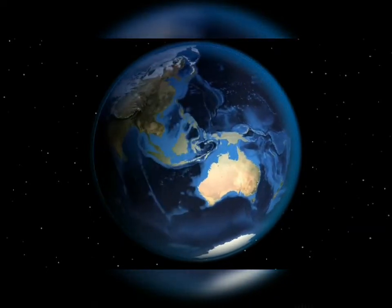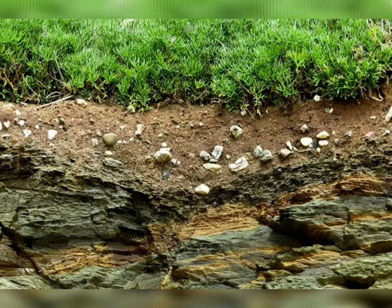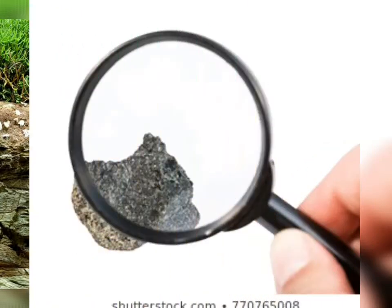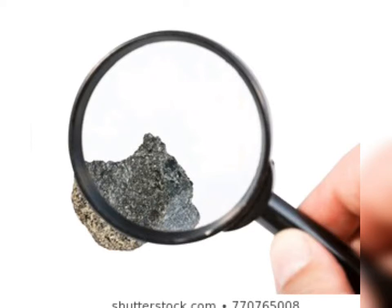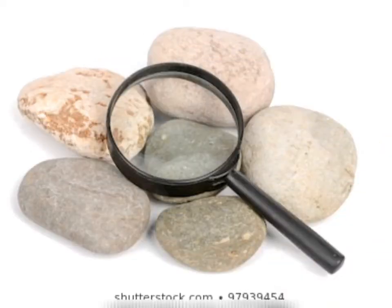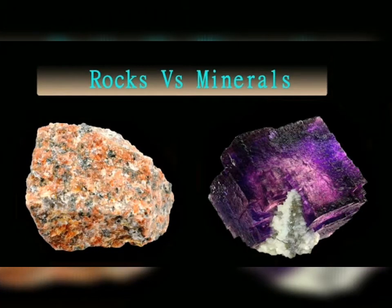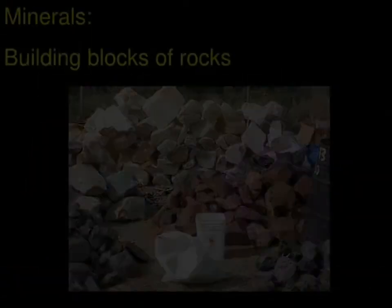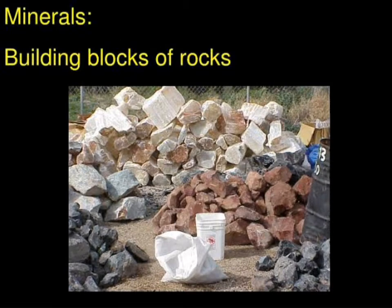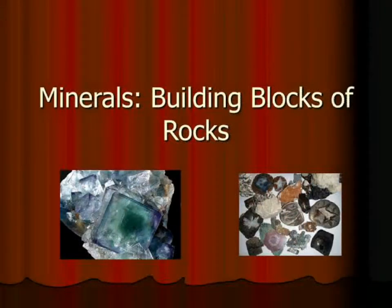If we go very deep inside the Earth, there are mostly rocks of various types — it is completely filled with rocks. If you hold a rock and look at it with a magnifying glass, you can see small particles of grains. These small particles are the minerals. Minerals are the grain particles or the building blocks of rocks, and all the minerals combine to form one rock. Many rocks contain many minerals of different colors, so each rock can contain many minerals depending on that particular rock.